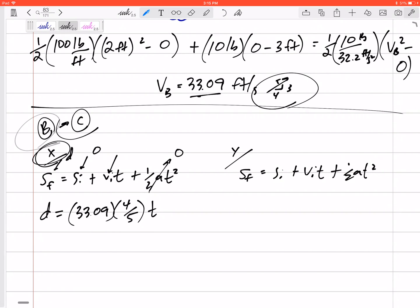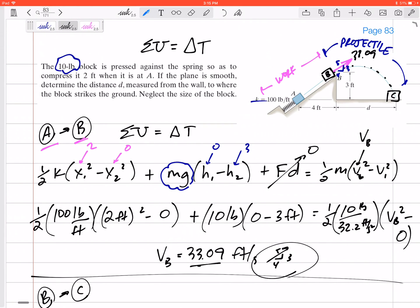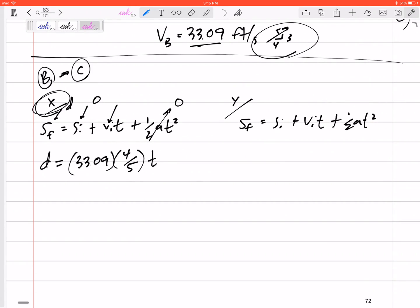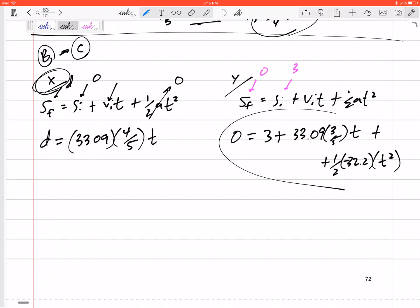In the Y direction. Remember, we're going from B to C. In the Y direction, it starts up here. It ends down there. What do I want to call my ground? I think I'm still going to call my ground down here. So I'm going to say it starts at three, ends at zero. So I'm going to say it starts at three, ends at zero, zero equals three plus V initial. It does have V initial. It's positive because it's up 33.09, the three fifths component times T plus one half. I'm in English units. So plus one half, 32.2, and that's negative 32.2 T squared. So in this equation, the only unknown is T. Might have to use a quadratic formula. I'll do a little bit more math here. 16.1 T squared minus 19.85, three T minus three.